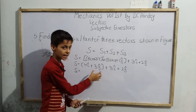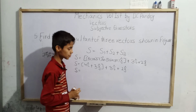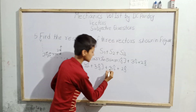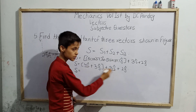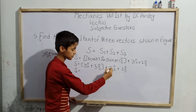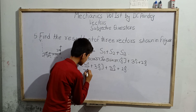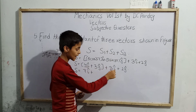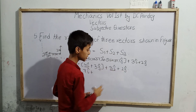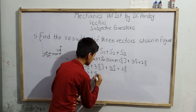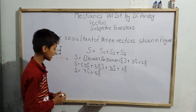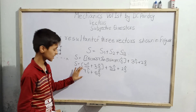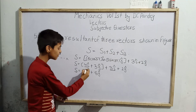We add the components according to their unit vectors. The i-hat components: 4 i-hat plus 3 i-hat equals 7 i-hat. The j-hat components: 3 j-hat plus 2 j-hat equals 5 j-hat. So the resultant S equals 7 i-hat plus 5 j-hat.